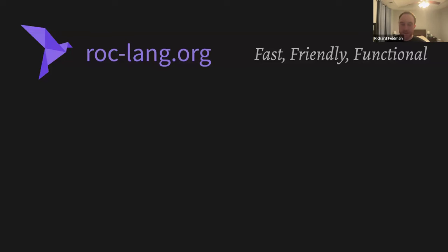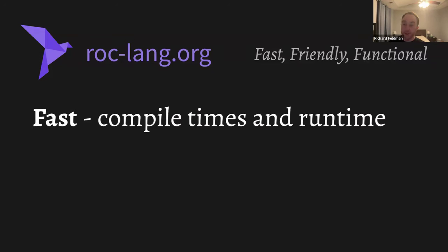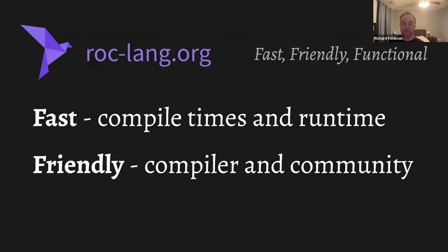Fast forward a couple of years — I've been working on a programming language called Roc. Roc's tagline is that it's a fast, friendly, functional language, and it's a direct descendant of Elm. One of its values is really fast compile times, and we want them even faster. We're also trying to compete with the fastest garbage-collected imperative languages in terms of runtime performance. 'Friendly' covers both the compiler error messages and the community — I'm fortunate to have a community of people who are awesome and really nice to each other, and I hope we keep doing that as we grow.